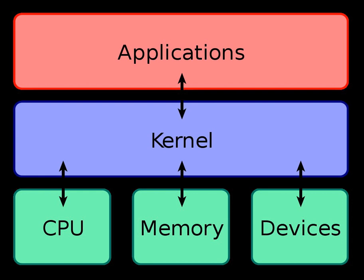Although Mach, developed at Carnegie Mellon University from 1985 to 1994, is the best-known general-purpose microkernel, other microkernels have been developed with more specific aims. The L4 microkernel family, mainly the L3 and L4 kernels, was created to demonstrate that microkernels are not necessarily slow. Newer implementations such as Fiasco and Pistachio are able to run Linux next to other L4 processes in separate address spaces. Additionally, QNX is a microkernel principally used in embedded systems, and the open-source software Minix, while originally created for educational purposes, is now focused on being a highly reliable and self-healing microkernel OS.